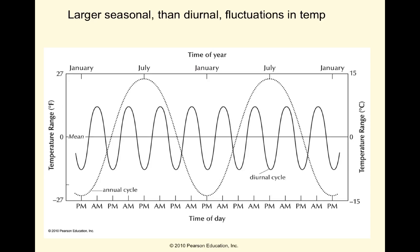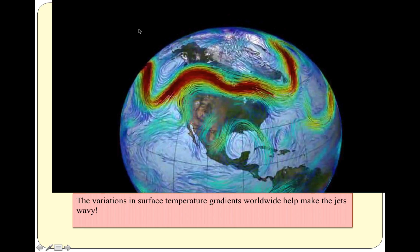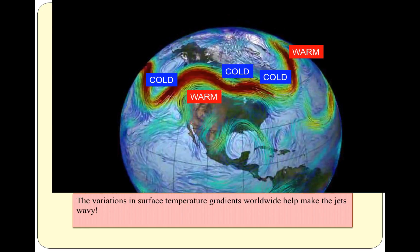The big difference in the mid-latitudes as we move away from the tropics is larger seasonal than diurnal fluctuations in temperature. We're looking at the seasonal fluctuation in temperature — overhead sun, long days in July, warm temperatures, short days, less intense sun in winter — as you go throughout the yearly cycle. One of the key players in the mid-latitudes is the jet stream. The variations in surface temperature gradients worldwide help make the jet wavy, and the waves in the jet themselves help spin up storms.